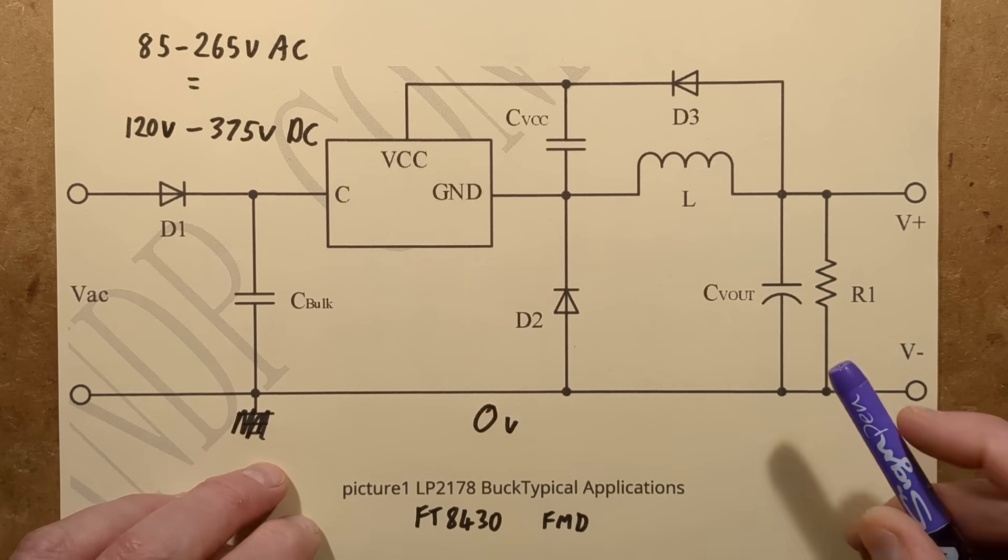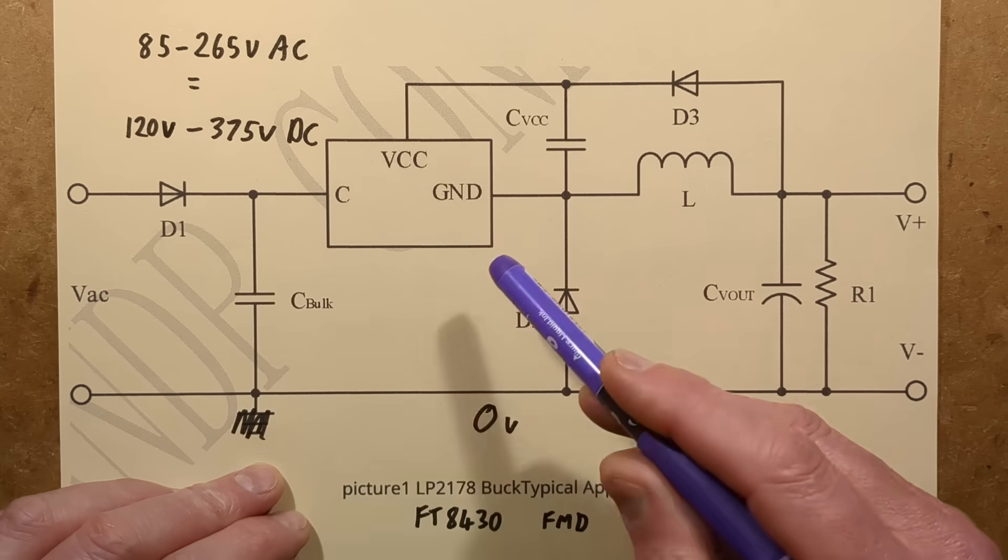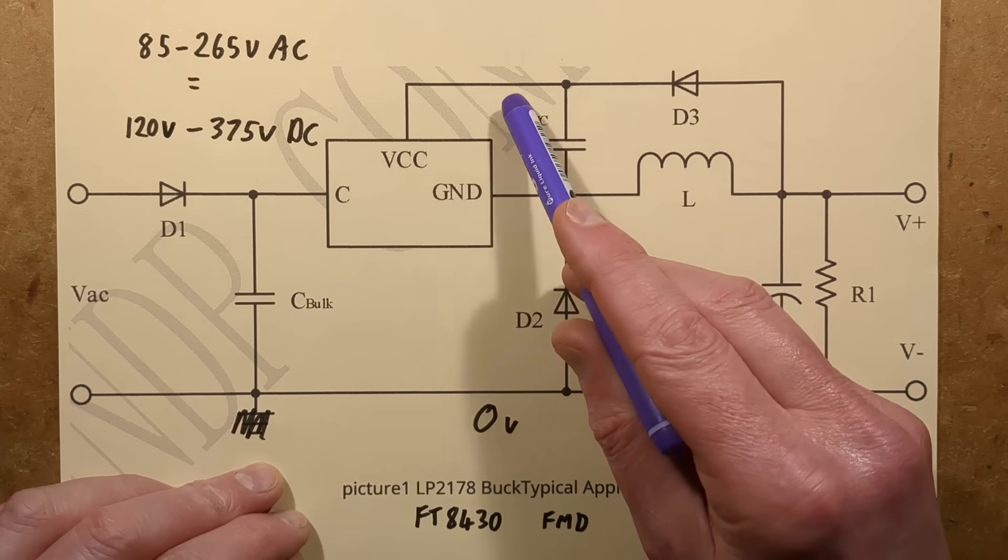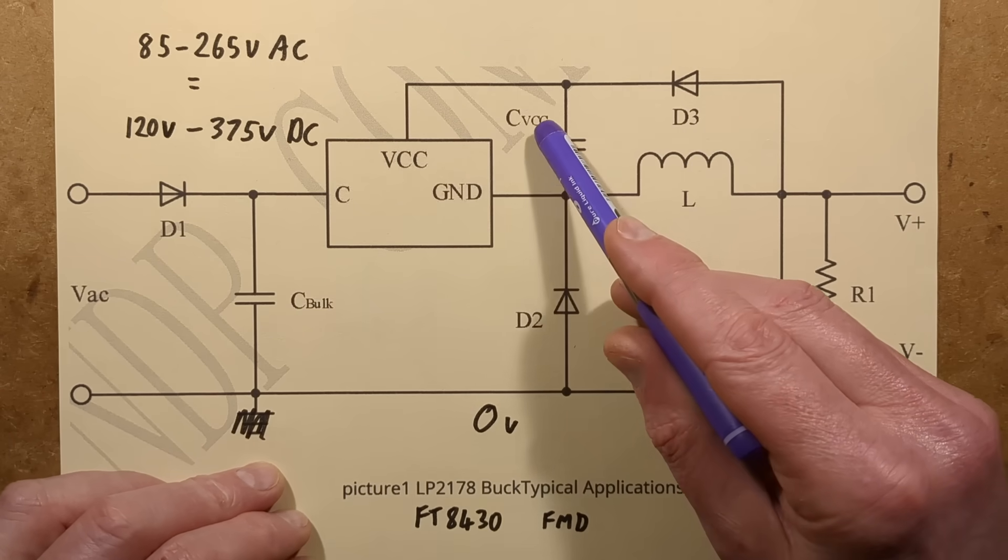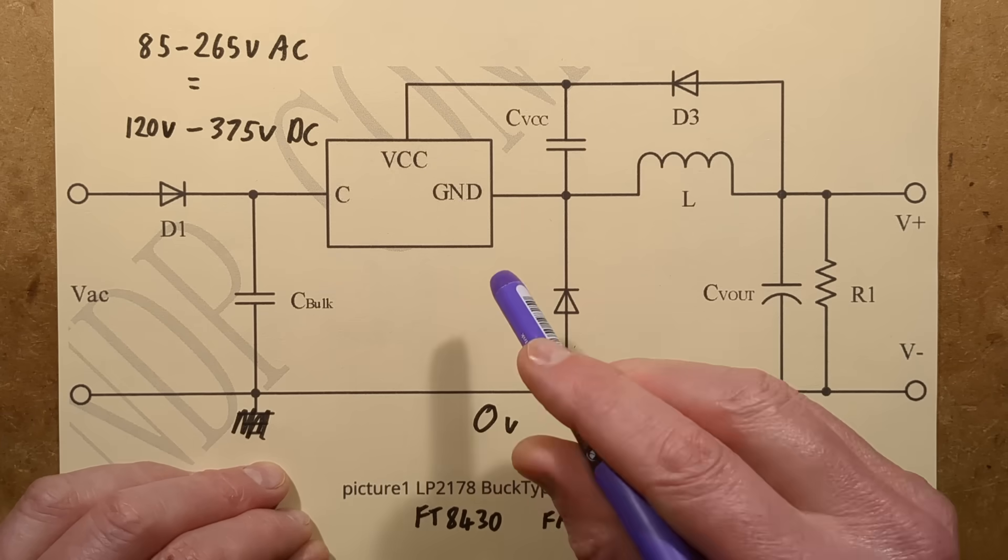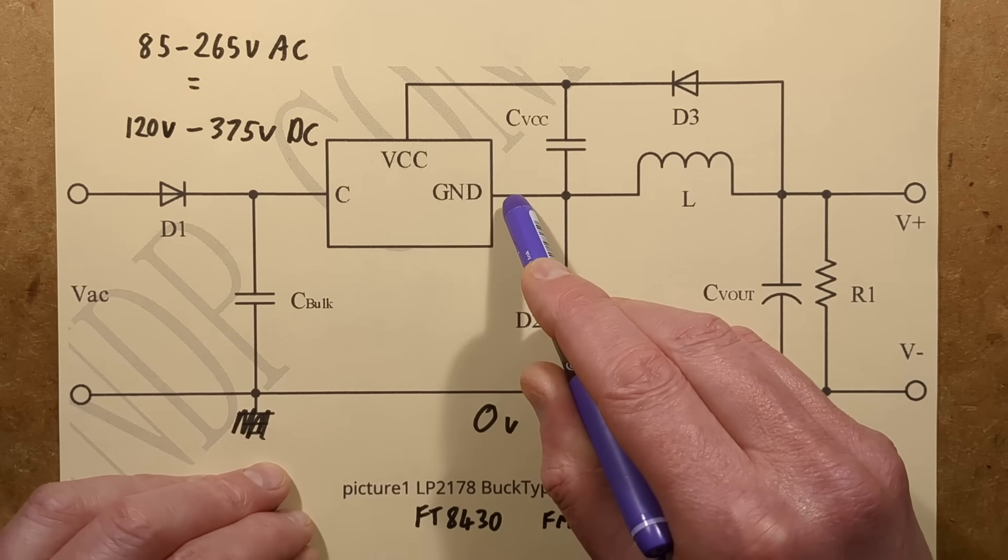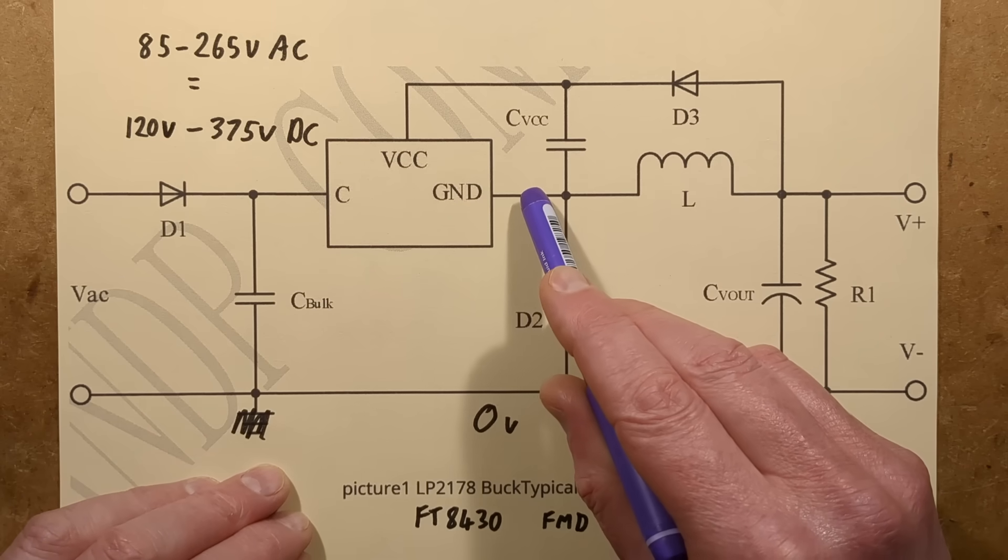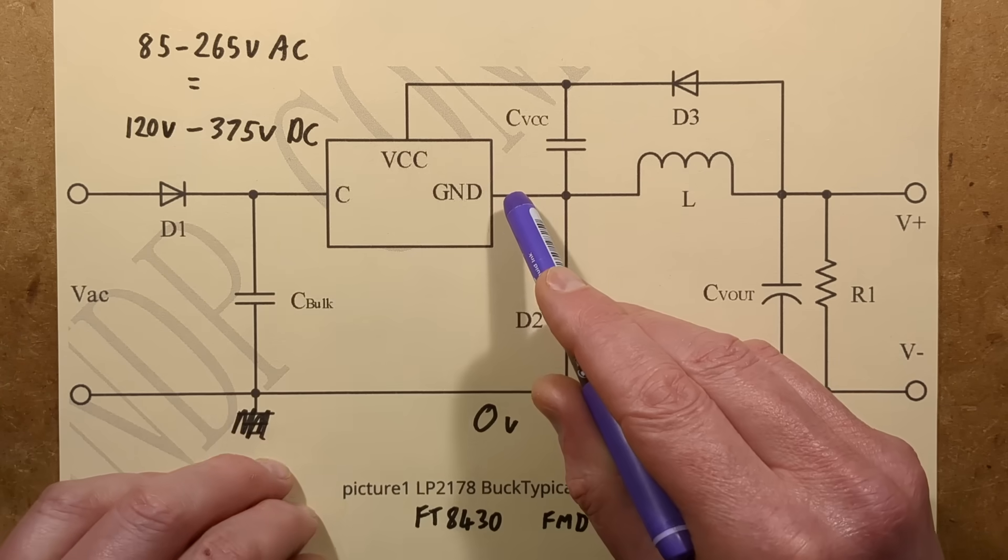So the first thing that happens when you power this up is that the main supply comes in here, charges this capacitor up, and the circuitry starts charging this capacitor via an internal current limited supply. Once it reaches approximately 5 volts, the circuitry kicks into action and it starts switching this ground connection, which is quite odd but it has double purpose. It switches it directly over to the high voltage side, so up to 375 volts.